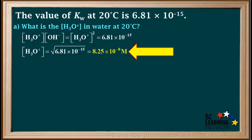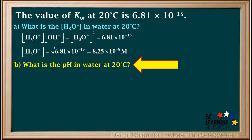Which is 8.25 times 10 to the negative 8th. The second question asks us the pH in water at 20 degrees.